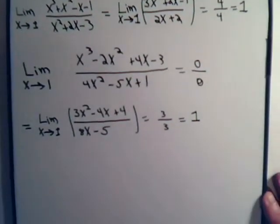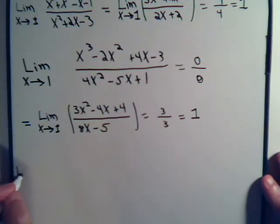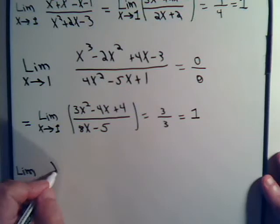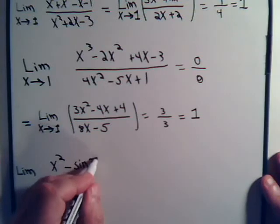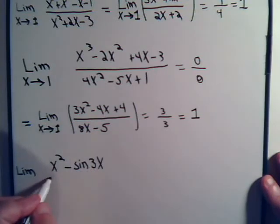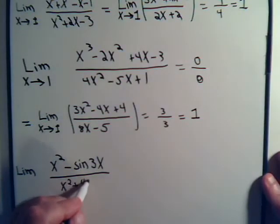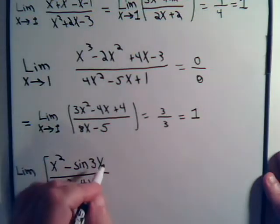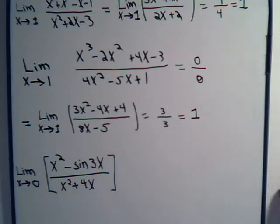Let's try this with a trig function. Suppose we have, we want to take the limit of x squared minus the sine of 3x divided by x squared plus 4x. And we want to take the limit of this as x approaches 0. So if we go ahead and just put x in, we're going to have 0 minus 0 up here. The sine of 0 is 0, divided by 0 plus 0.